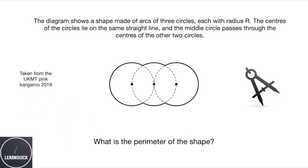Hello and welcome to this video. The diagram shows a shape made of arcs of three circles, each with radius r.